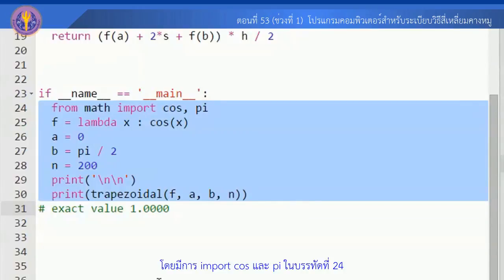a เท่ากับ 0, b เท่ากับ pi หารด้วย 2 เราจะ import cos และ pi ในบรรทัด 24 เพื่อ define ฟังก์ชัน f และฟังก์ชัน b และเราจะใช้ n เท่ากับ 200